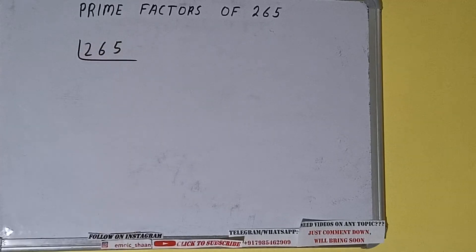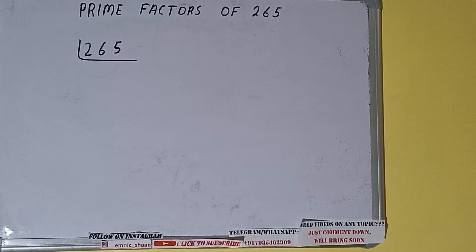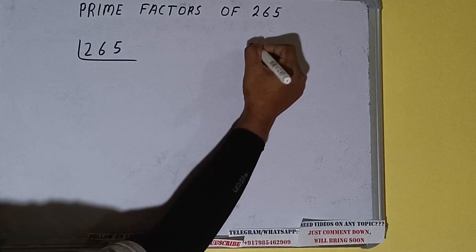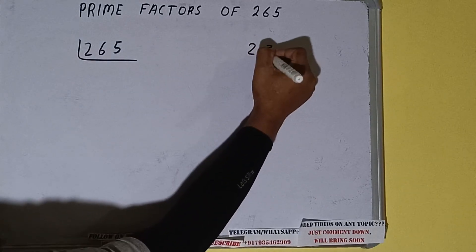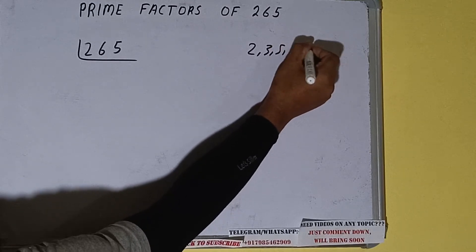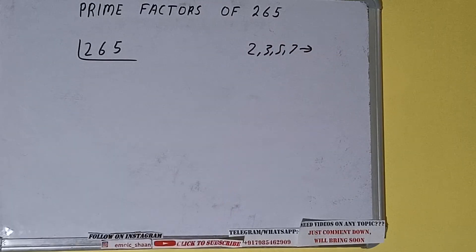The next thing we need to know about is what are prime numbers. Prime numbers are numbers that are divisible by one and the number itself, like 2, 3, 5, 7, and so on.